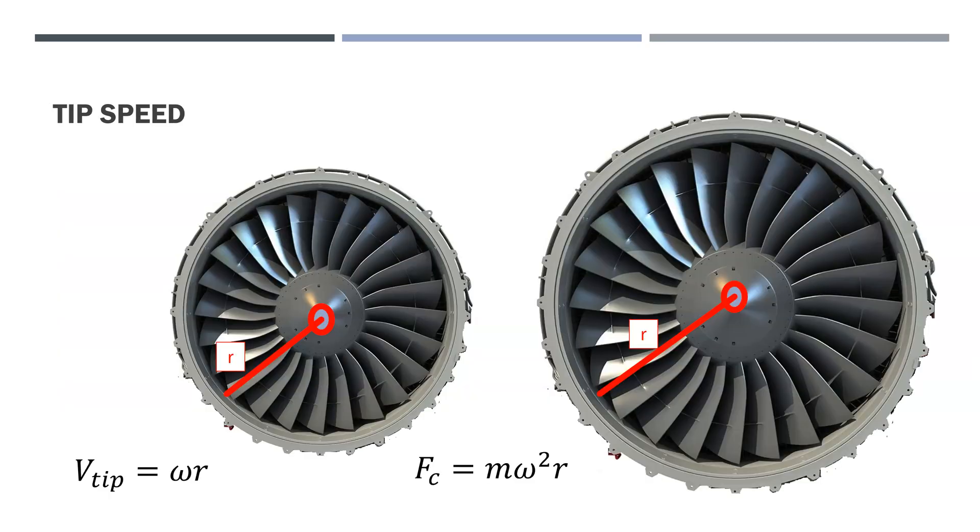One of the issues with bypass ratios in the past has been the tip speed. So if we take this engine here, and it has, let's say, there's the turbo fan, and let's say the fan has a radius of R, then the tip speed is ωR.